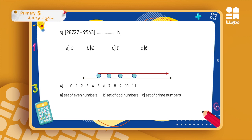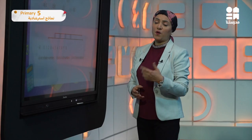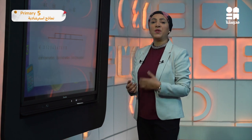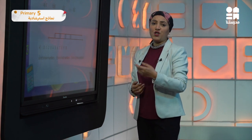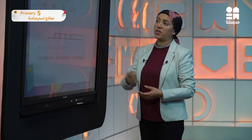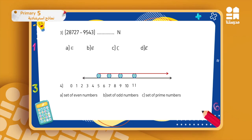Question three: twenty-eight thousand seven hundred and twenty-seven minus nine thousand five hundred and forty-three. The first number is bigger than the second number, so it is possible to carry out the operation. In this case the answer will belong to N.